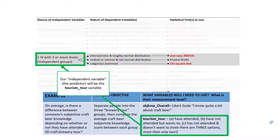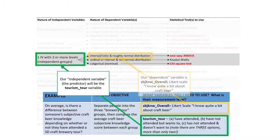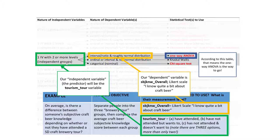Separating people into three distinct groups is our independent variable. The cheat sheet says: if you have one independent variable with two or more levels and they are independent groups — if you belong to one group you can't also belong to another — then the dependent variable is subjective knowledge overall. Since it's a five-point Likert scale we can assume interval level, calculate an average, and assume it's roughly normally distributed. This tells us the one-way ANOVA is the way to go. What distinguishes it from the independent samples t-test is that we have three or more groups; the t-test is designed for exactly two groups.